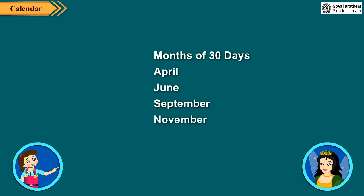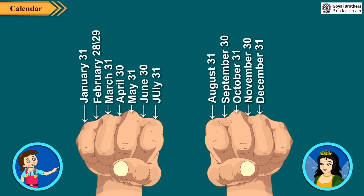Learn this method for remembering the number of days in each month. Hold your hands into a fist. Now go up and down counting on your knuckles. Start with January from the little finger of your left hand. All the knuckle months have 31 days. In most years, February has 28 days, but in a leap year it has 29 days.